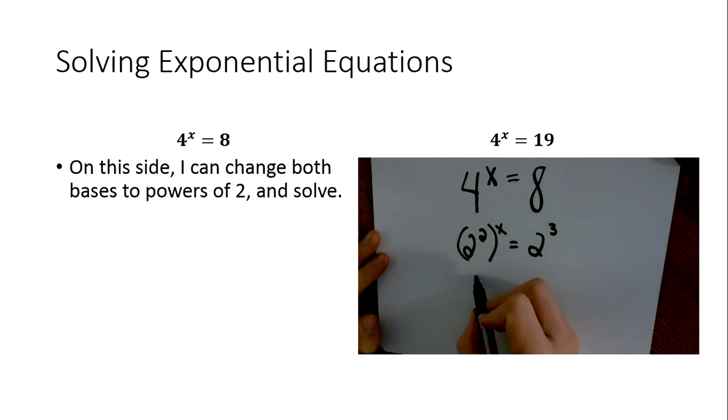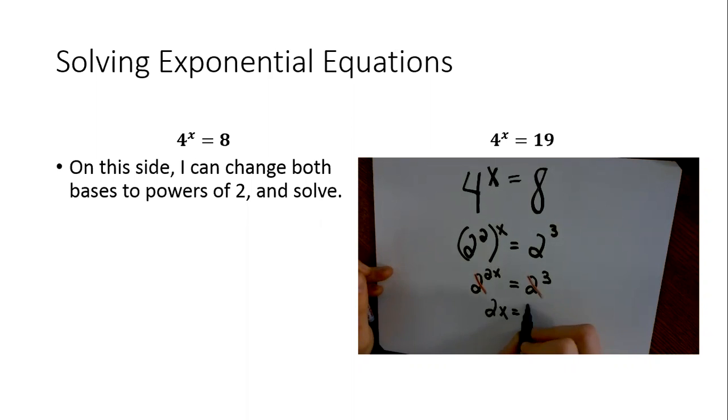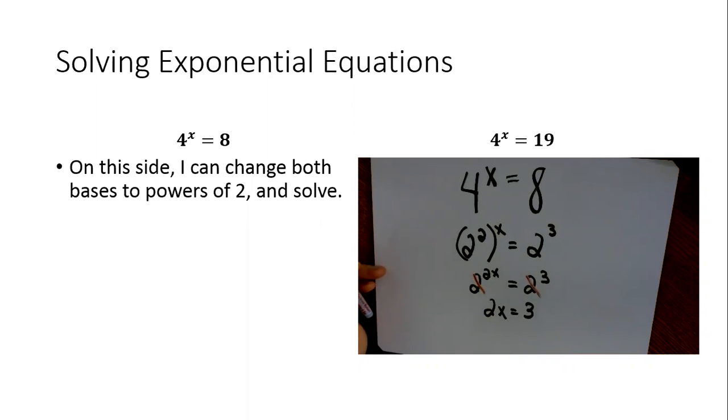Power to a power I multiply, so that's 2 to the 2X equals 2 to the third. And then we know that if the bases are the same, we can get rid of them and just set the exponents equal to one another. The bases are the same and the exponents must also be the same.